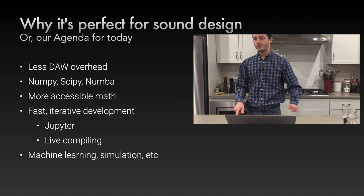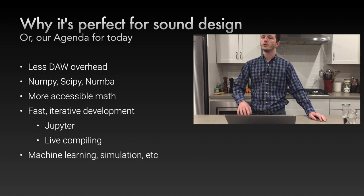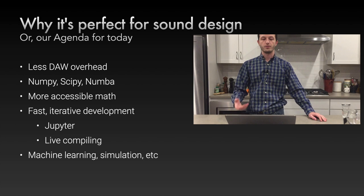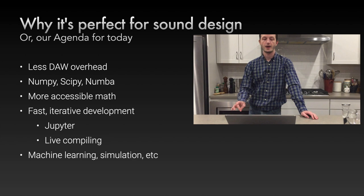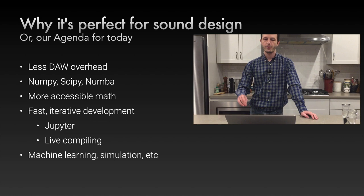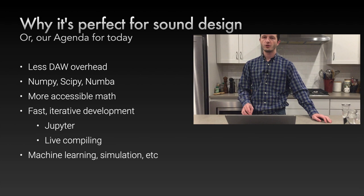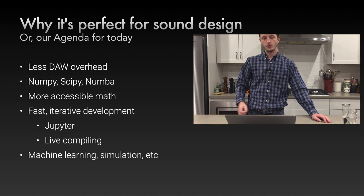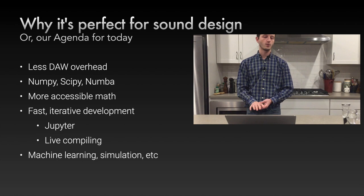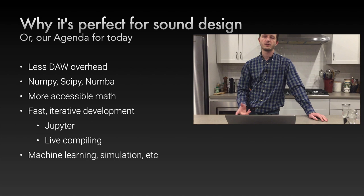The reason Python is perfect for sound design is: first, you can avoid DAW overhead — just write code to make sound. You get access to scientific libraries like NumPy, SciPy, and Numba, which back up your array handling and math needed for sound design. You also get an iterative development environment through Jupyter and live compiling, and access to machine learning and simulation.